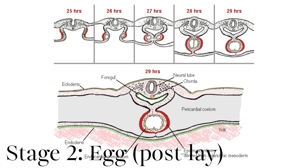Nervous system and feathers develop from the ectoderm, the respiratory system from the endoderm, and the skeletal system from the mesoderm. Cell differentiation leads to tissue, organ and body system formation by the time the egg is laid.